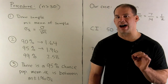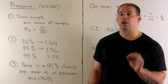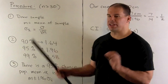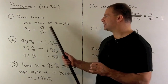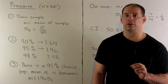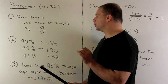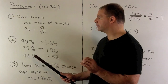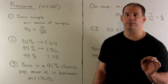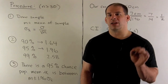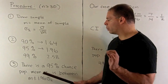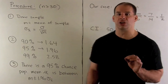Our procedure for getting the 95% confidence interval: first, draw a random sample and call the mean of the lengths in the sample m. Then compute the standard deviation for the sampling distribution as the population standard deviation divided by the square root of the sample size. For a normal distribution, each confidence level has a corresponding factor — for 95%, the factor is 1.96. The conclusion is there's a 95% chance the population mean is between m plus or minus 1.96 times the standard deviation of the sampling distribution.